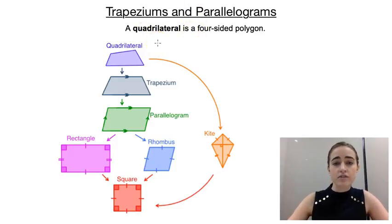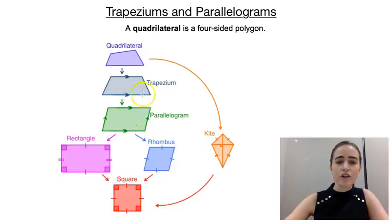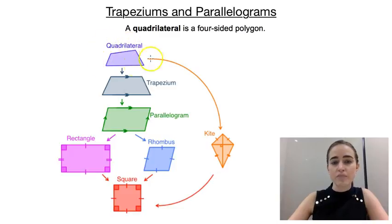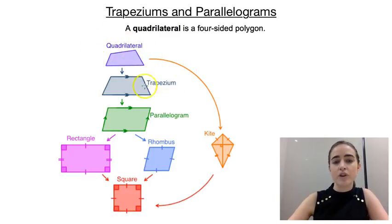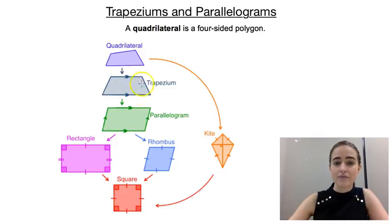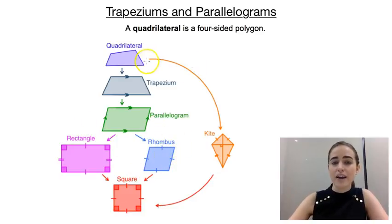A quadrilateral is just any four-sided polygon. I've got here this sort of family tree of quadrilaterals. We've got your basic quadrilateral, then if we go one step more specific, we've got a trapezium — a quadrilateral that has at least one pair of parallel sides. Then if we get more specific, we can have a parallelogram, then a rectangle or a rhombus and a square. And a kite is sort of off to the side here.